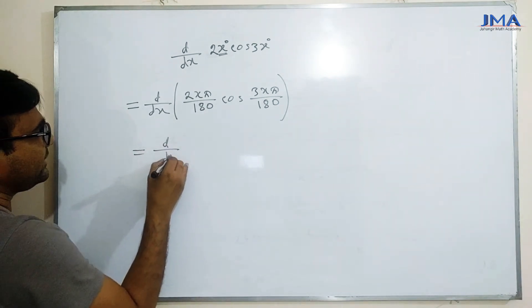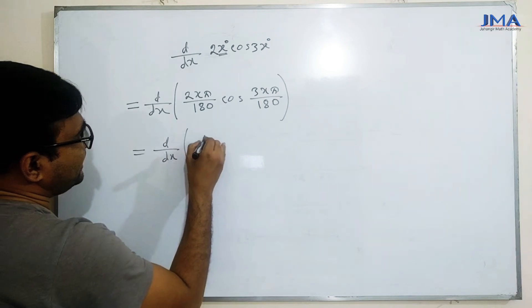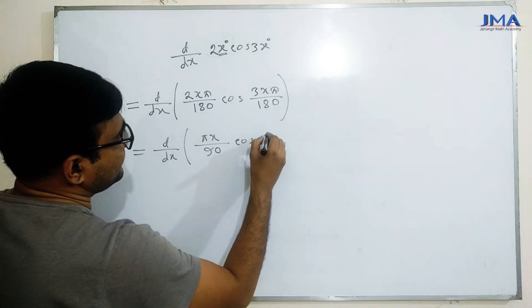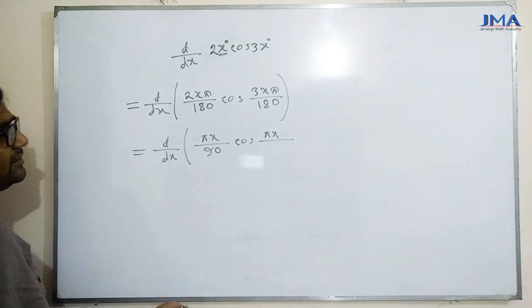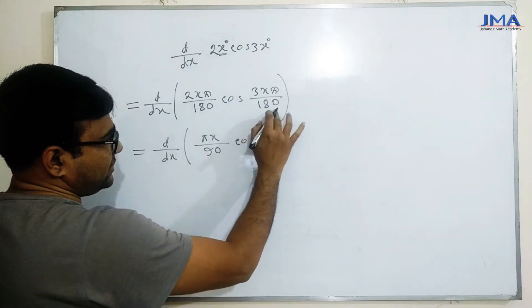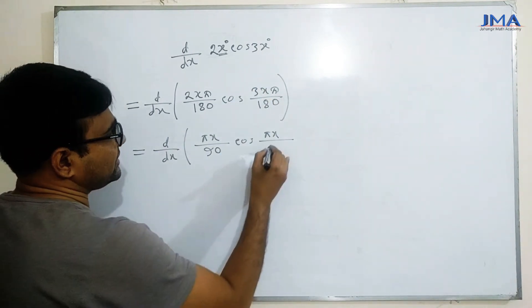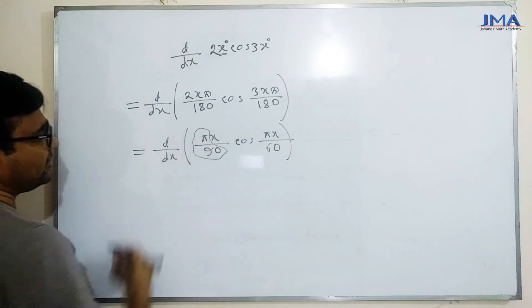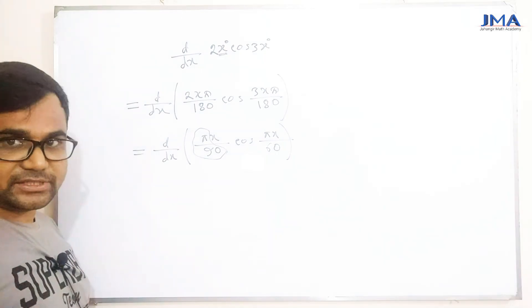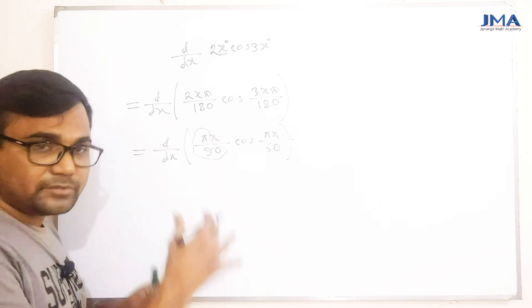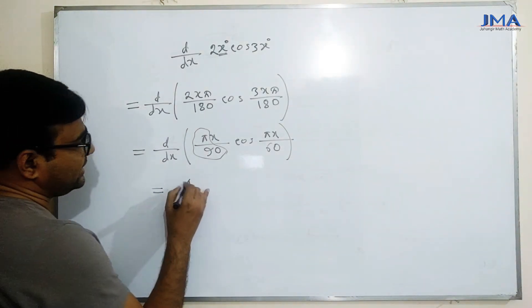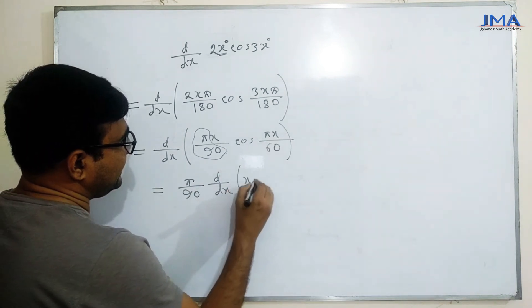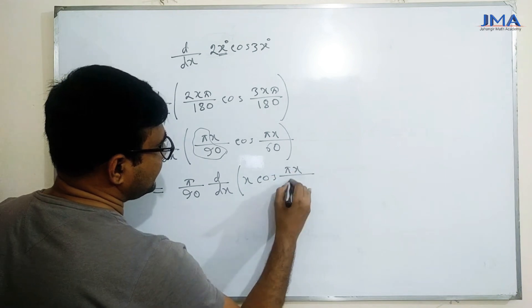2x ડિગ્રી સમાન: અહીં pi x લઈએ, 90 માટે pi x ને ધીમે ધીમે જોઈએ. ધીમે ધીમે કરો, ત્યારે pi by 90 બહાર આવે. pi by 90 દ્વારા x, pi x ઘટે.